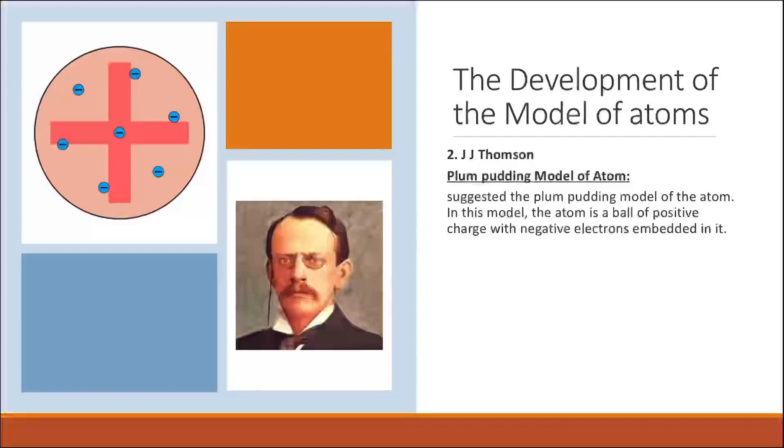This led him to suggest what is called the Plum Pudding model of the atom. In this model, the atom is a ball of positive charge with electrons of negative charge embedded in it.